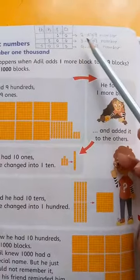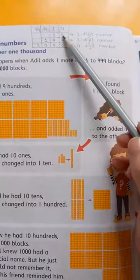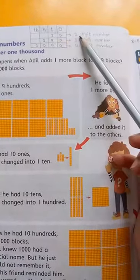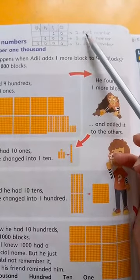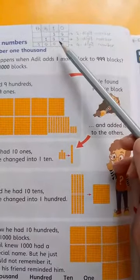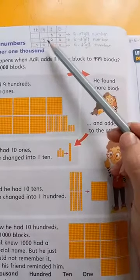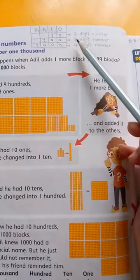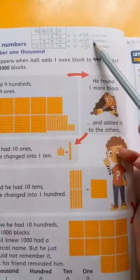Now, the main thing is that when we have two numbers, so we call it as a two digit number. When we have three numbers, for example one hundred, so we call it as a three digit number.